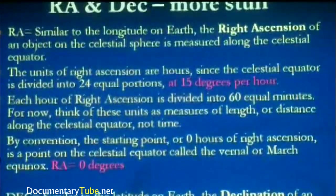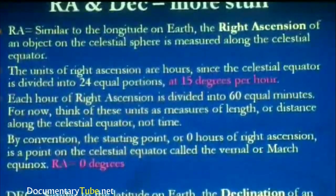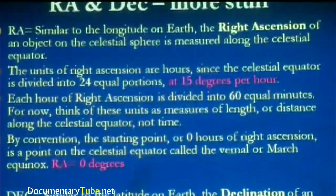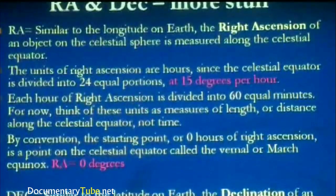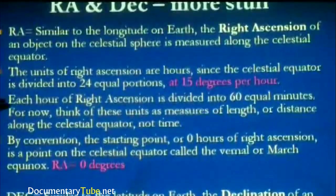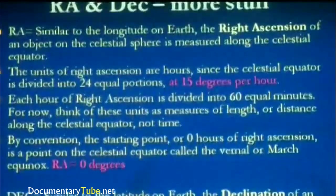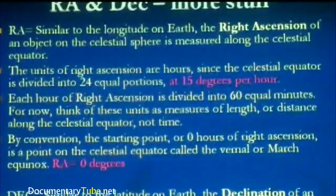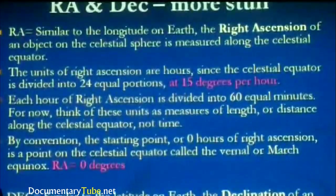Think of these units as measures of length or distance along the celestial equator, not time. When we talk about an hour of right ascension, we don't mean looking at your watch for an hour — we're talking about 15 degrees. So in 15 degrees, we would have 60 equal minutes. By convention, the starting point — zero hours of right ascension — is a point on the celestial equator called the vernal or March equinox, where right ascension equals zero degrees.